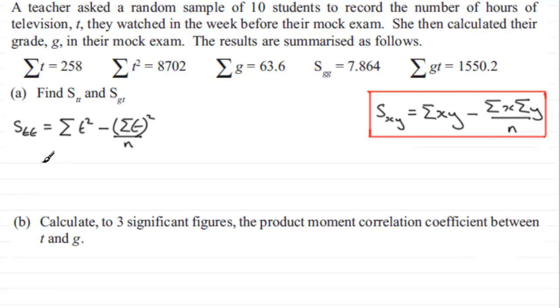So when it comes to this part we've just got to fill in our values. Sigma t squared then is 8702. And then we subtract sigma t all squared so that's 258 all squared, and it's divided by the number of observations which for this question is 10. We have a random sample of 10 students so we divide that by 10.